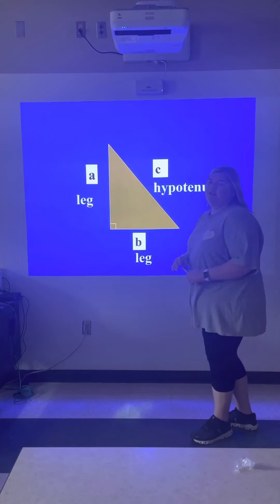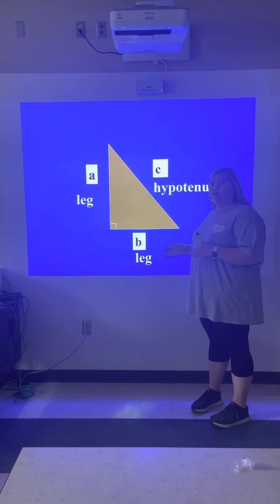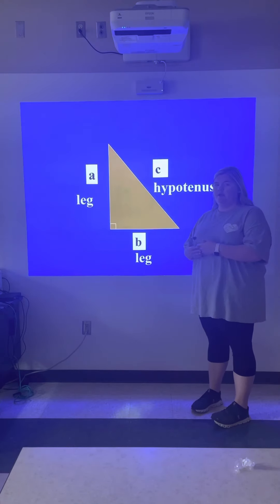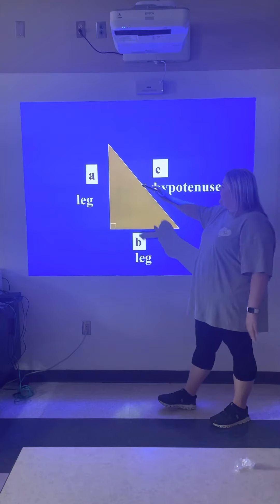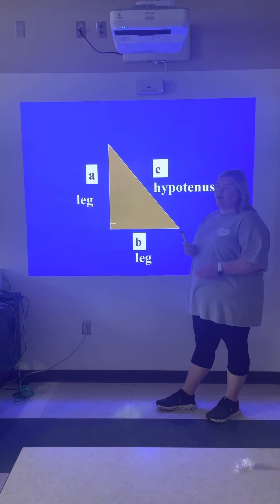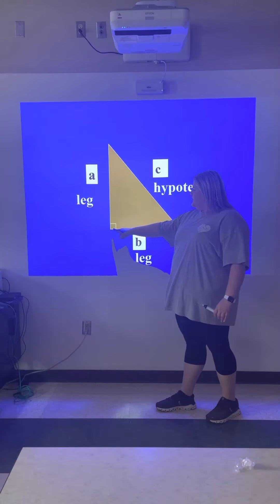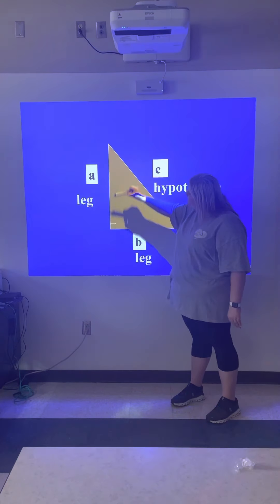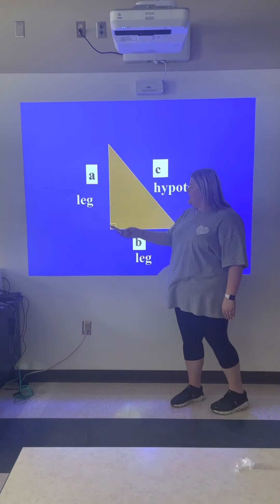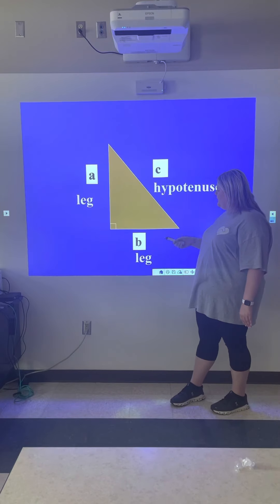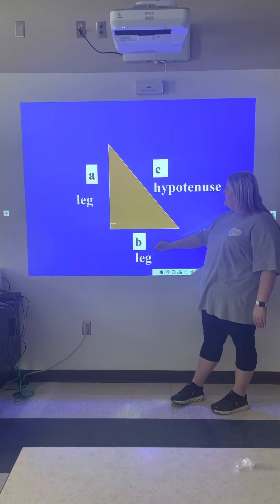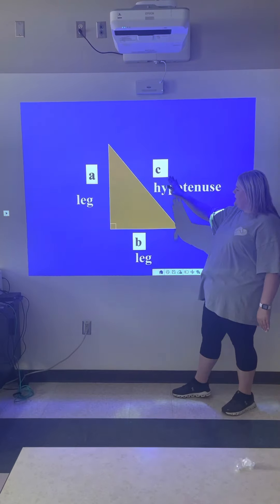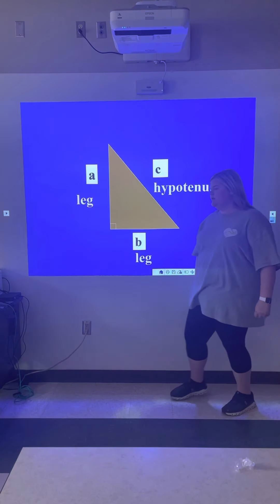This is an example to show how the formula is used and where we get the numbers to plug in. We have a right triangle here. This leg will be labeled as a, this leg will be labeled as b, and this slant is c, which is the hypotenuse.